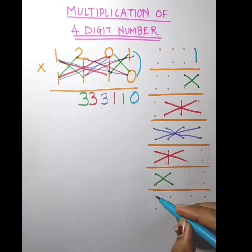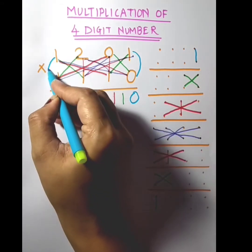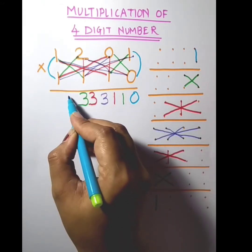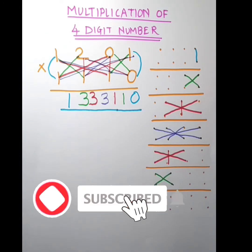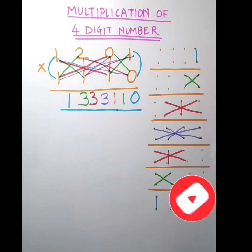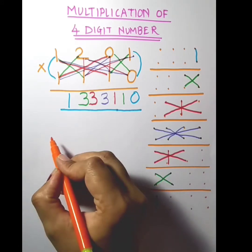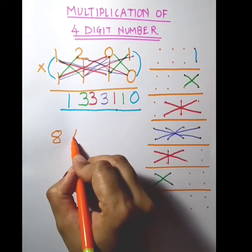Now the last two digits: 1 into 1, so it is 1. So the answer is 1, 3, 3, 3, 3, 1. Let's take one more example with a bigger number — 8421 multiplied by 2141.